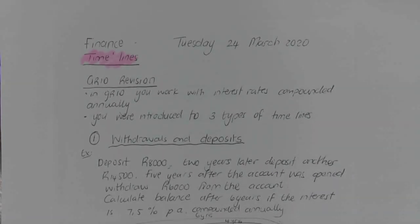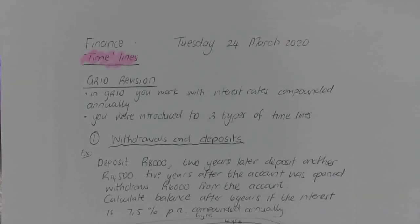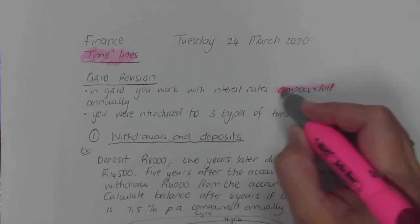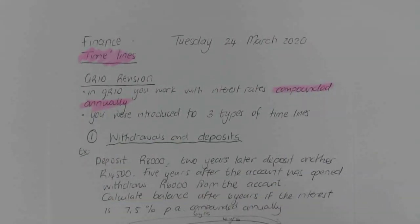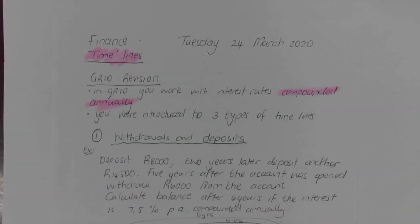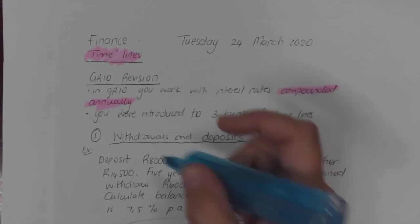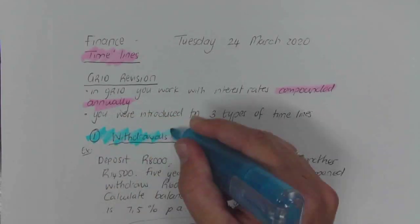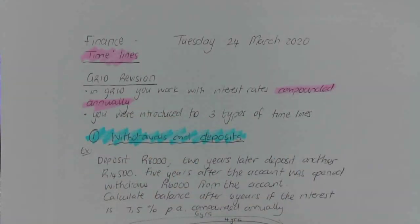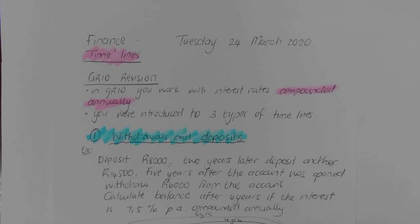In Grade 10 you did timelines and you did it where it was compounded annually. You were introduced to three types of timelines. The first one was the timeline that was built with deposits and withdrawals, which means that for every deposit or withdrawal that was made, there had to be a new term in your equation setup.